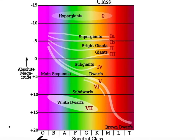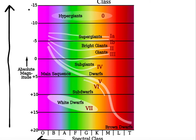On the left axis, we have increasing luminosity, or in this case, increasing absolute magnitude going in the vertical direction, going up. Notice that the numbers are negative at the top and positive at the bottom. Absolute magnitude negative numbers are bright objects, and absolute magnitude positive numbers are dim objects.